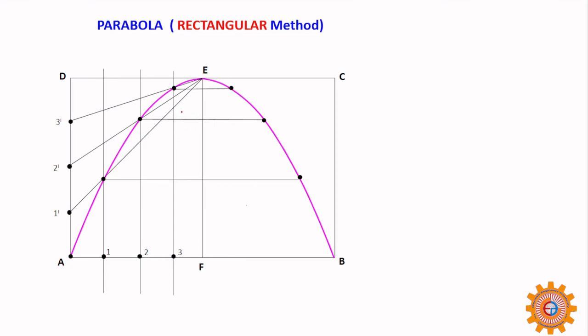So this is one point. From this vertical line, you can take these points also by compass and accordingly you can put it. How simple it is - parabola by rectangular method.